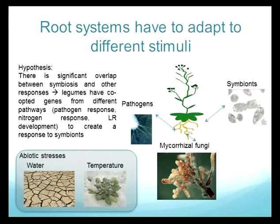Our hypothesis is that there is significant overlap between the symbiosis and other responses. There are some elements from pathogen response in the symbiosis, some elements from lateral root development, some elements from nitrogen response, and of course the mycorrhizal fungi response. We think that legumes have used elements of these different pathways and co-opted them to create their own response to rhizobium.